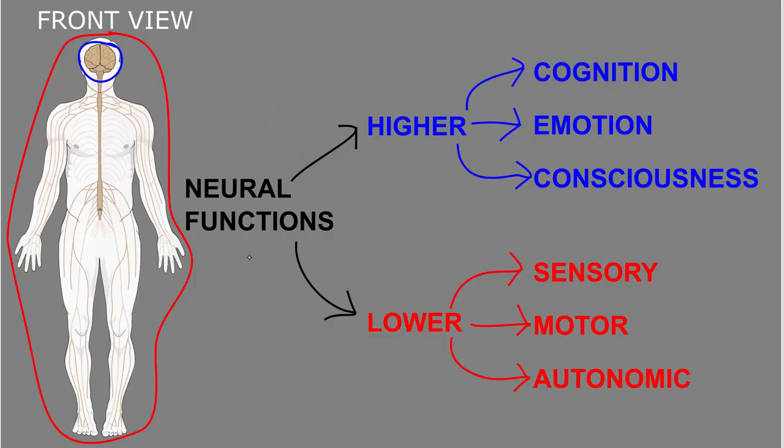The functions of the nervous system can be divided in many different ways. But the way I like to think about it is by dividing them up into what I refer to as the higher and the lower functions of the nervous system.